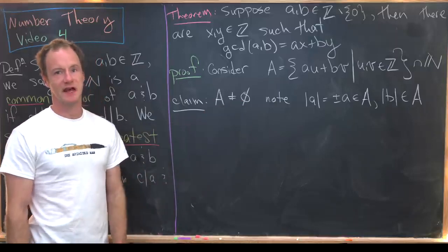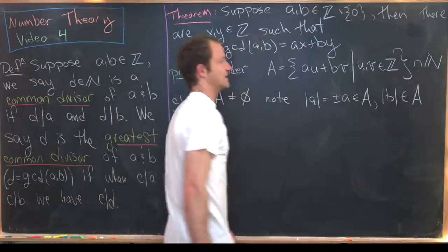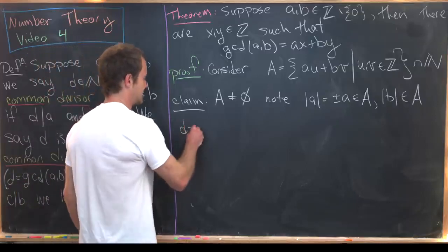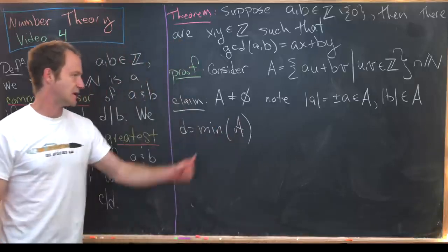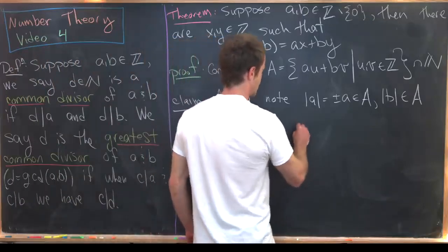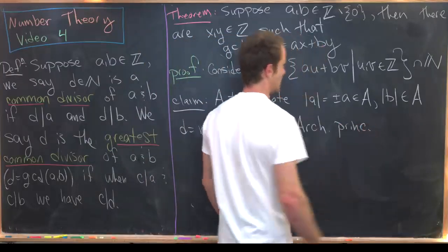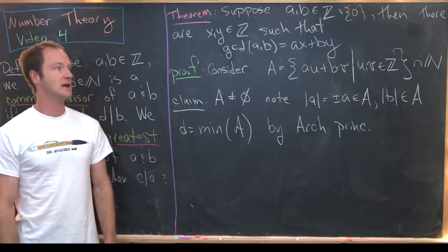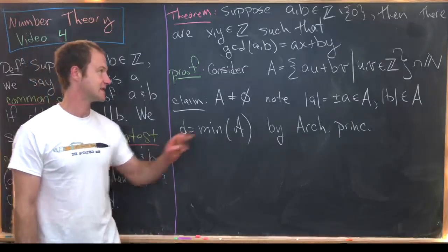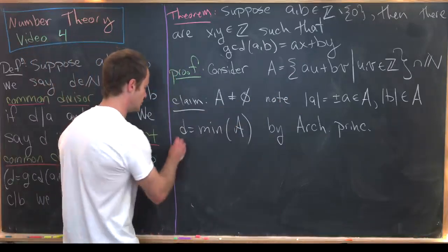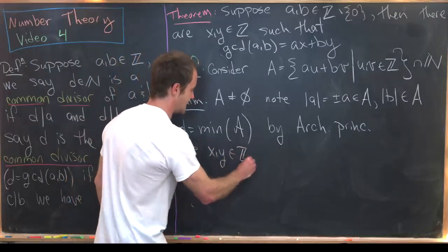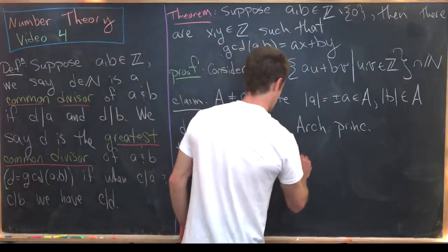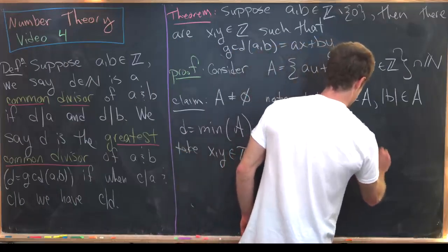Now that we've got a non-empty set of natural numbers, it has a least element by the Archimedean principle, which says every set of natural numbers has a smallest element. So let's let d equal that least element — d equals the minimum of A. Since d is of the form au plus bv, we take x and y to be the values of u and v such that d equals ax plus by.